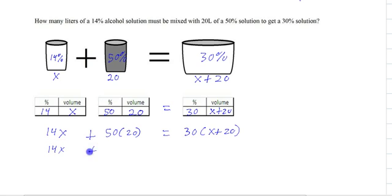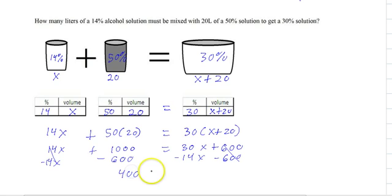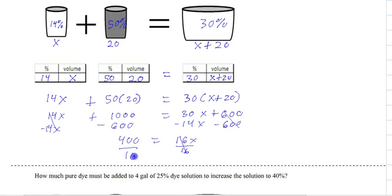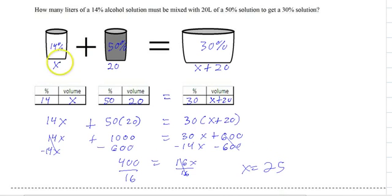So simplify. That's 10 and then two more zeros and then I would distribute and that's 6 with two zeros and there's your equation. So I'm going to bring the 14X over, that's 400 equals 16X, divide by the 16. So X equals 25 and what does that X represent? It's wherever we placed it. So it's the amount of 14 percent. So we have 25 liters of 14 percent.